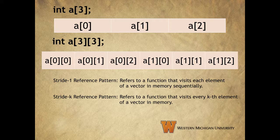Also, on the last slide, we saw a reference to something called a stride 1 reference pattern. A stride 1 reference pattern refers to a function that visits each element of a vector in memory sequentially. A stride k reference pattern, on the other hand, refers to a function that visits every kth element of a vector in memory.